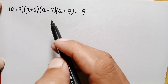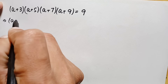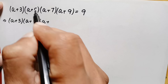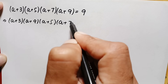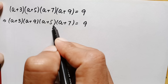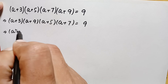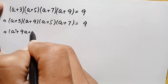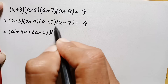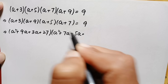To start our solution, we can rewrite the left-hand side by pairing the factors as (a+3)(a+9) times (a+5)(a+7) = 9. Now let's multiply these two pairs. The first pair gives a²+9a+3a+27, and the second pair gives a²+7a+5a+35.